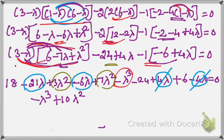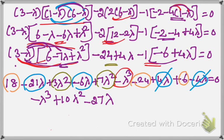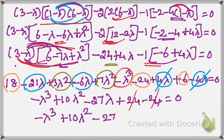After simplification: -λ³ + 10λ² - 27λ = 0. The constant terms cancel to zero. Dividing (or multiplying) all terms by -1 to get a positive leading coefficient.